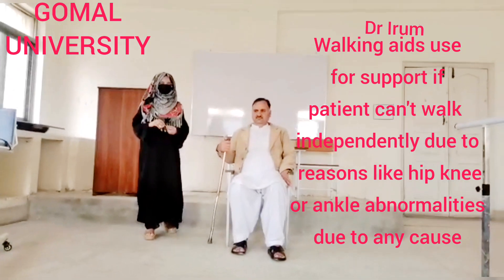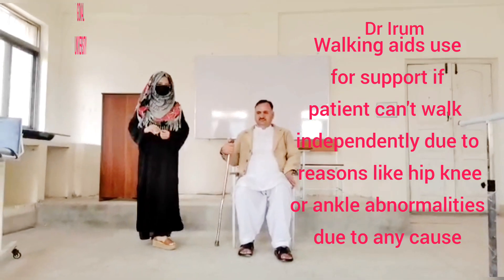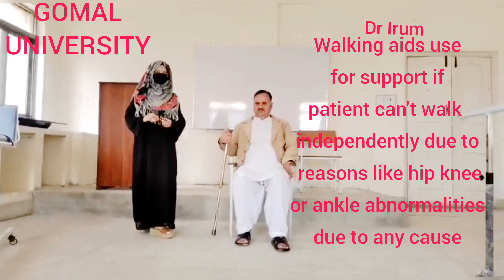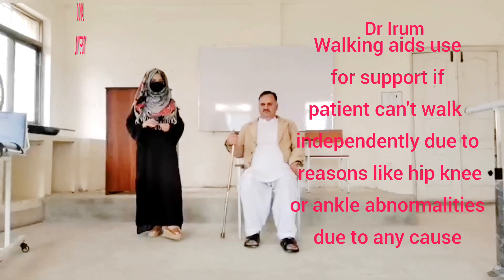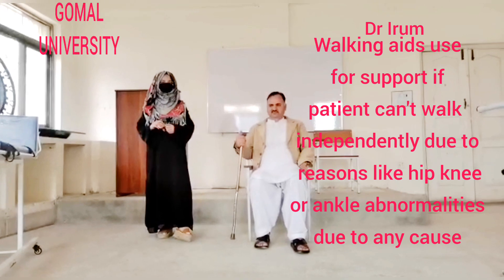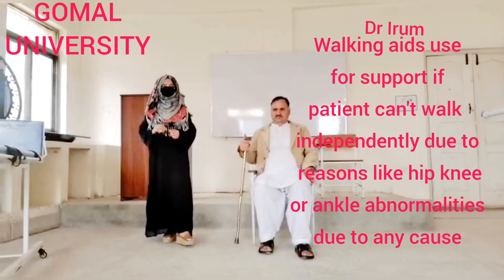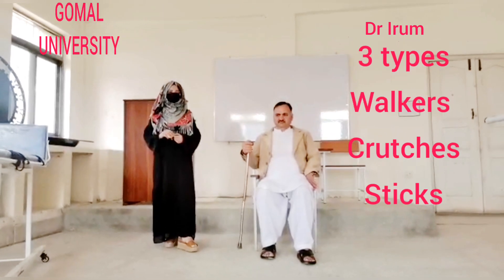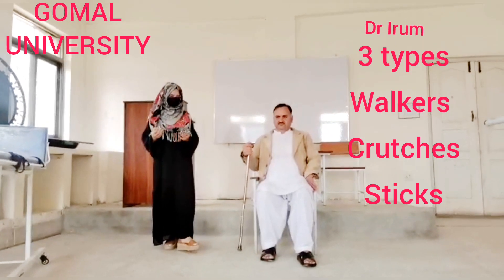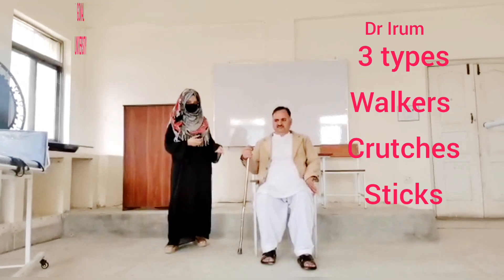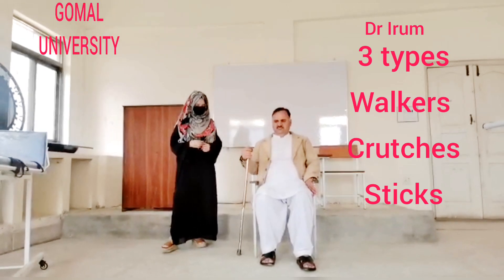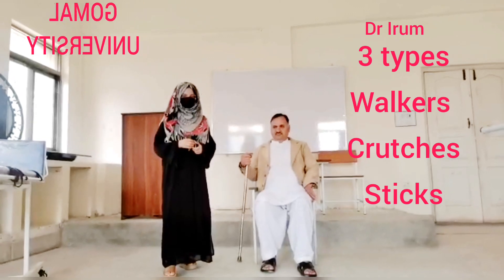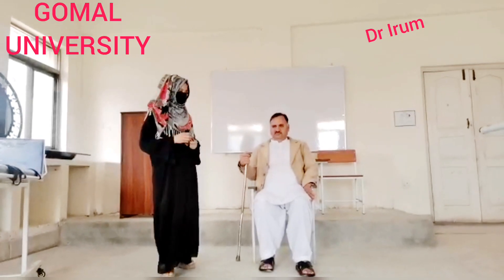As we discussed, walking aids are used for support if the patient cannot walk independently due to reasons like hip, knee, and ankle joint deformities. These deformities form due to any injury, fracture, accident, or stroke. There are three types of walking aids: walkers, crutches, and sticks. According to the patient's strength and balance, we prescribe from these types.